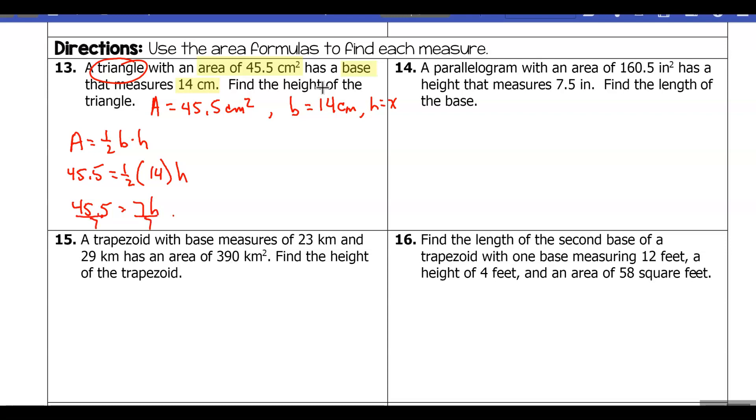by 7, and we get that h is 6.5. Let's not forget our units. Now this is just the height, so the height is just a distance, so it's going to be centimeters. Notice the area is centimeters squared—